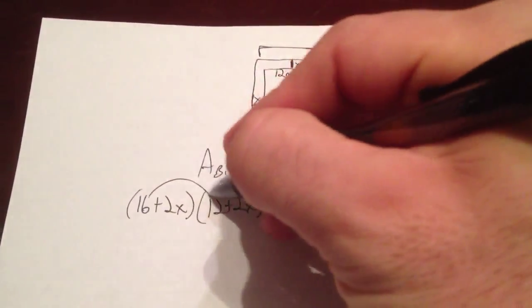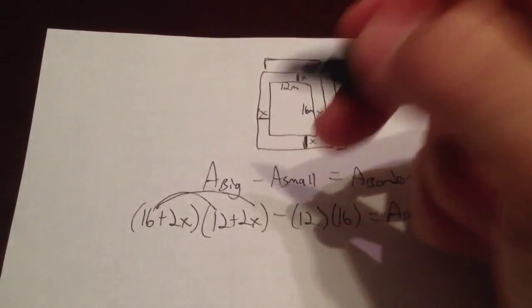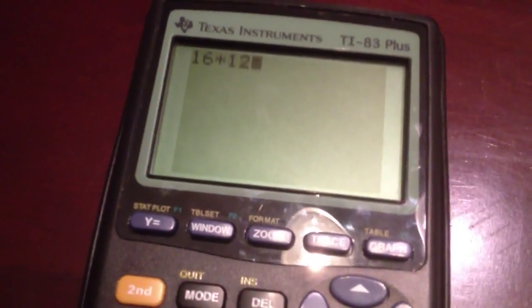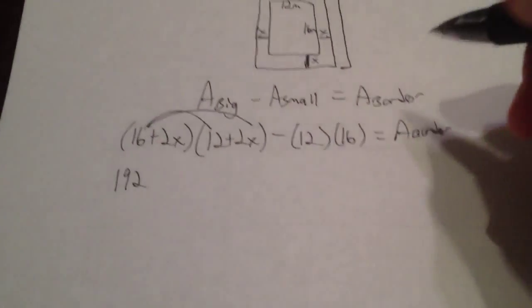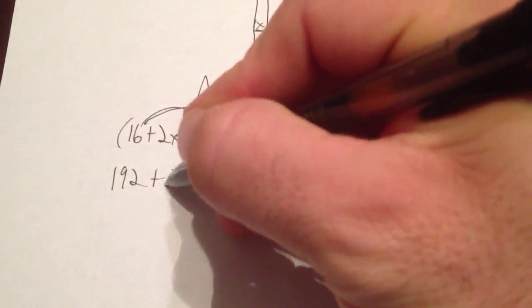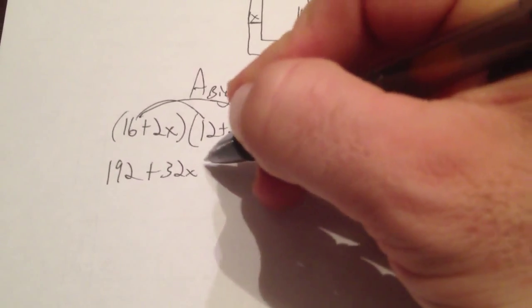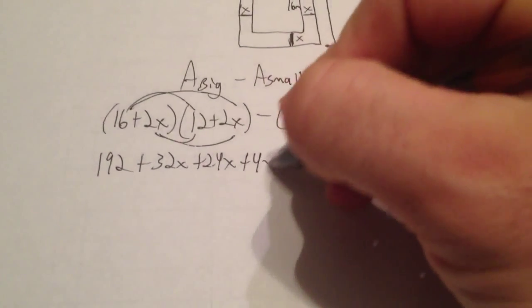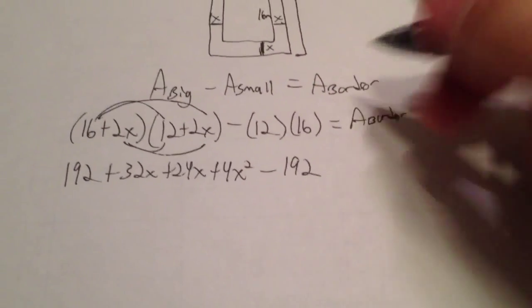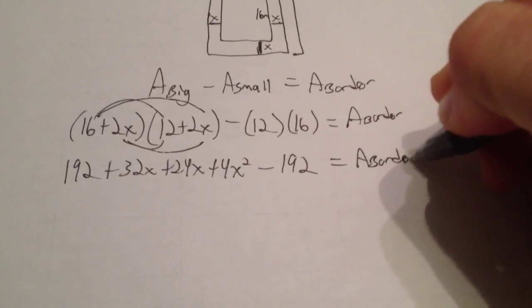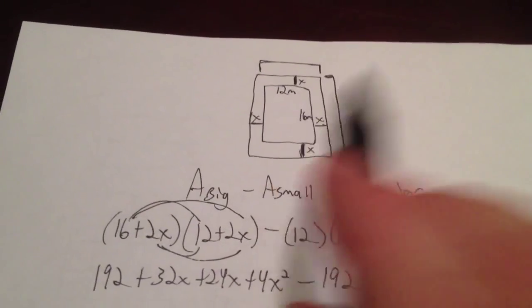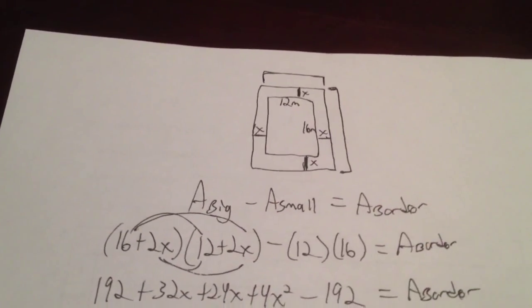So if you were to do the math and do the FOIL method to this guy right here, you're going to get 16 times 12 which is 192. Let me check my math real quick on the calculator to make sure that's the case, 192, good. And then 16 times 2x is 32x and then 2x times 12 is 24x and then 2x times 2x is 4x² minus the 192 that you have for the inside 12 times 16. What you will see is that the 192 and the 192 here cancel out. I talked about that, I said if you take away the small shape from the big shape, of course it's going to cancel out.